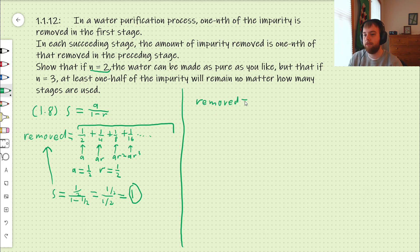So, our amount removed is 1 third, plus 1 ninth, plus 1 27th, plus 1 81st, etc.